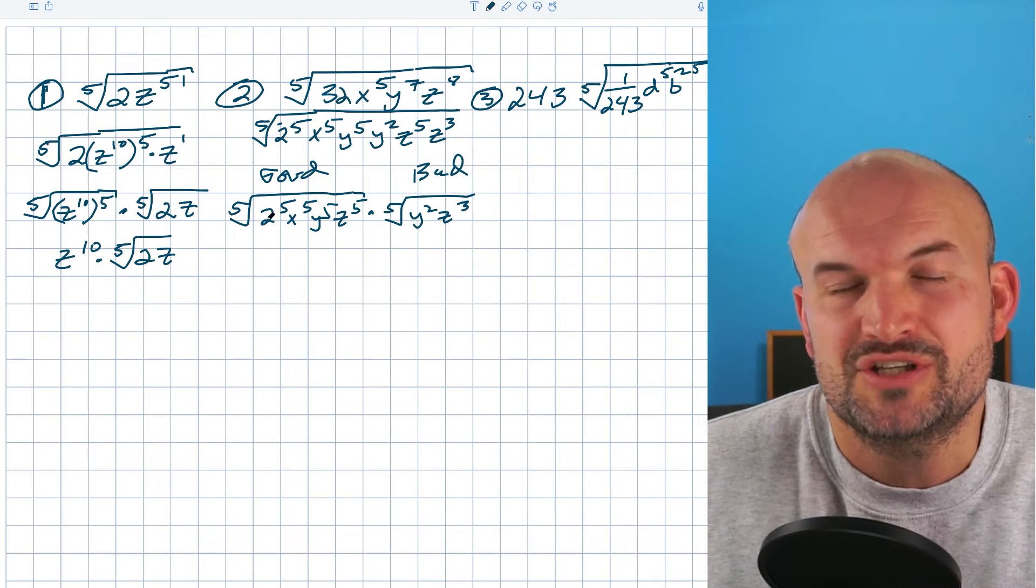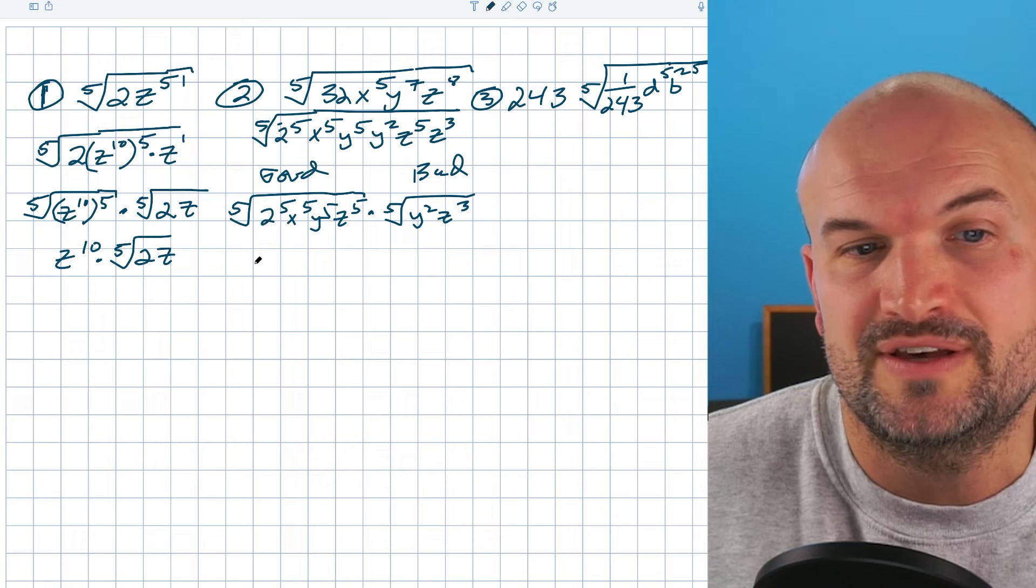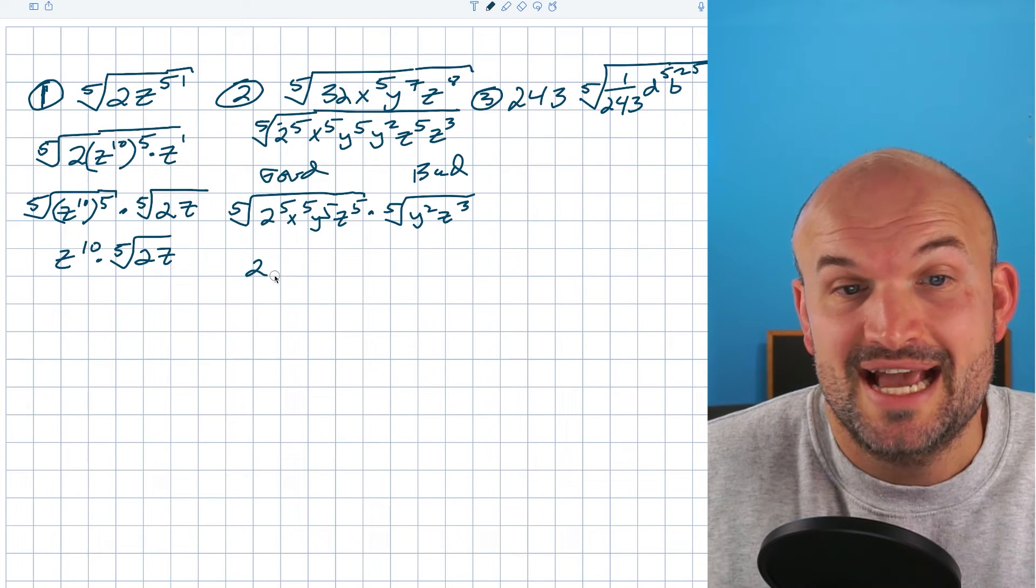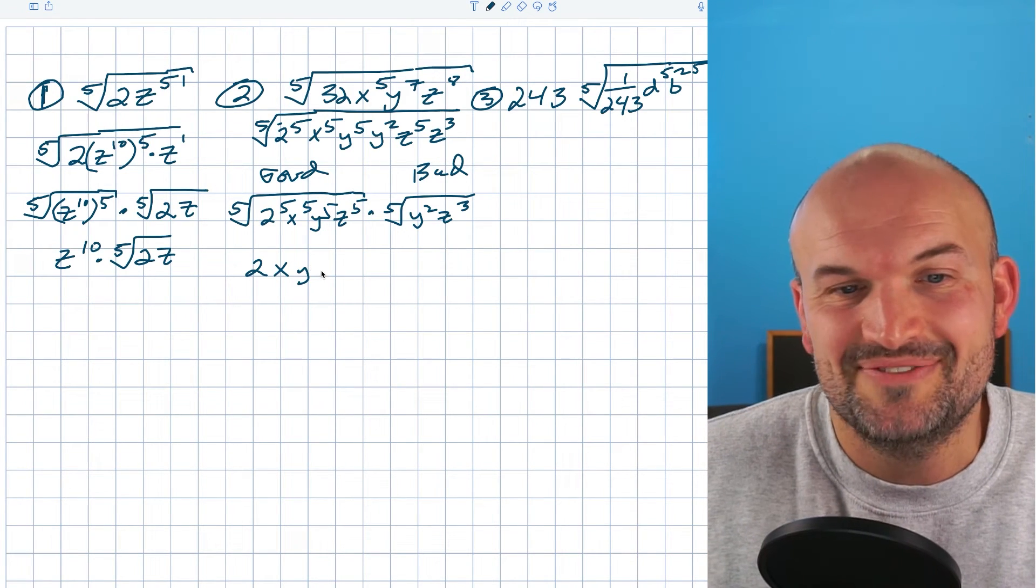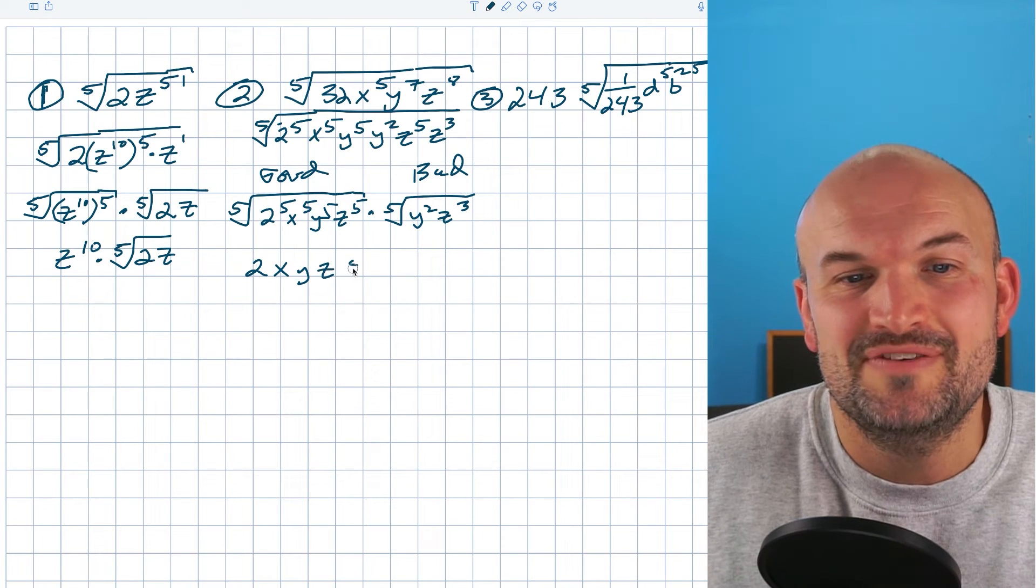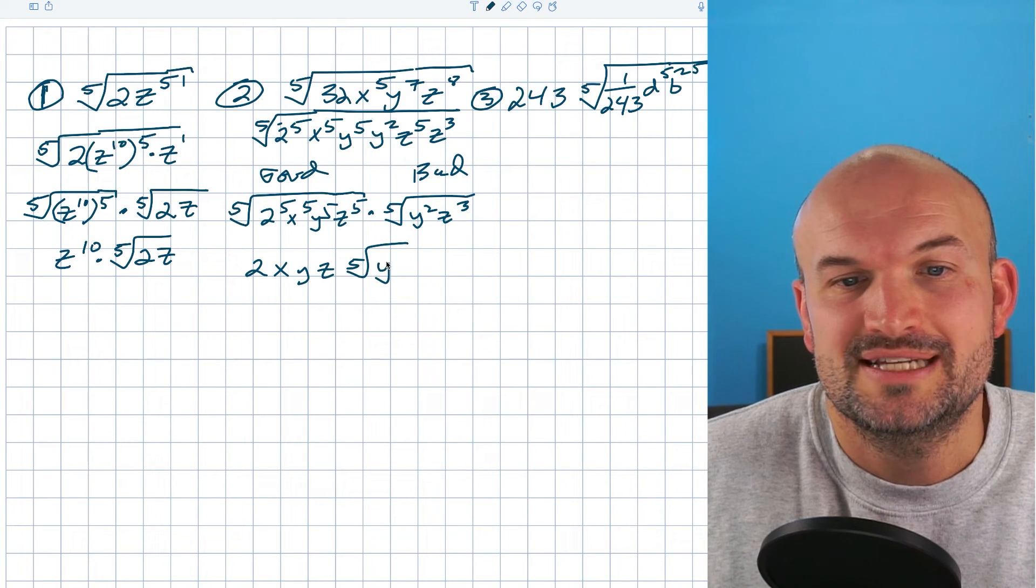And now I can break these up individually, or we can just recognize the fifth root of 2 to the fifth is a 2, the fifth root of x to the fifth is an x, fifth root of y to the fifth is a y, fifth root of z to the fifth is going to be a z, times the fifth root of y squared z cubed.